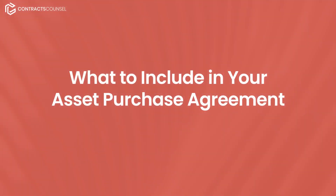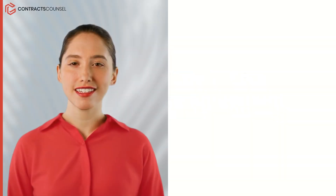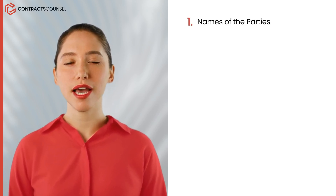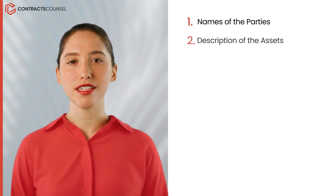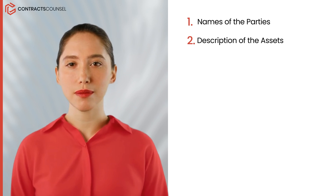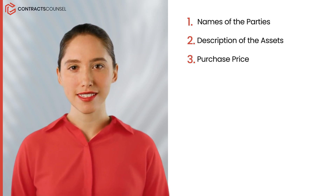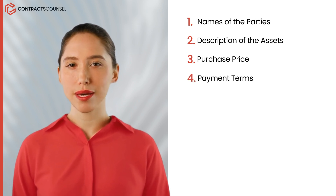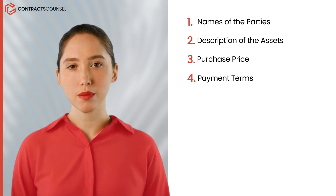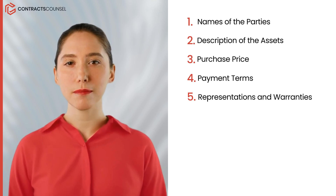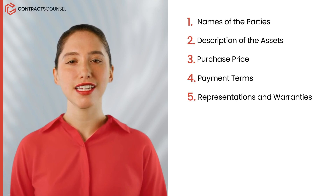There are common terms used in asset purchase agreements. Here are some you will find. One, names of the parties — the agreement includes the names of the buyer and seller. Two, description of the assets — this section describes the assets being sold, including detailed information. Three, purchase price — this specifies the total amount the buyer will pay for the assets. Four, payment terms — this details how and when the payment will be made. Five, representations and warranties — these are assurances given by both parties regarding various aspects of the assets and the sale.